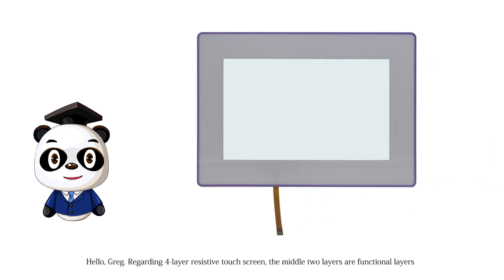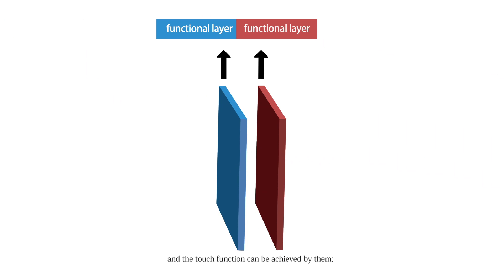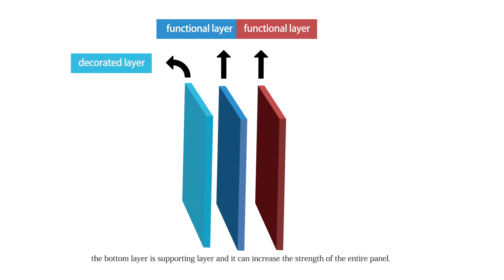Hello, Greg. Regarding 4-layer resistive touch screen, the middle two layers are functional layers and the touch function can be achieved by them. The first layer is decorated layer and the silk screen is painted on it. The bottom layer is supporting layer and it can increase the strength of the entire panel.